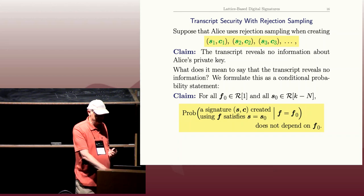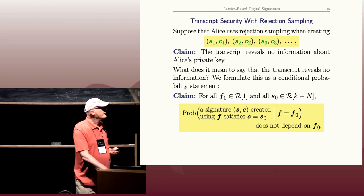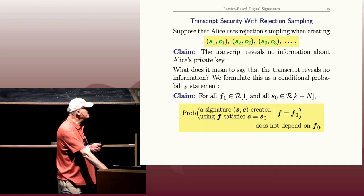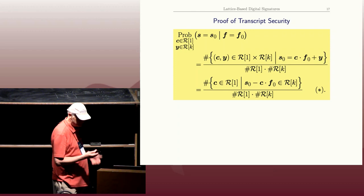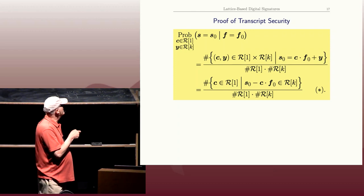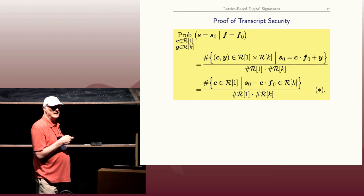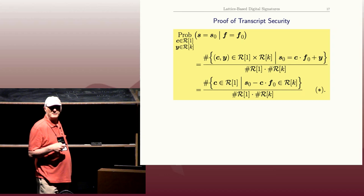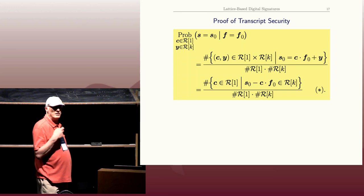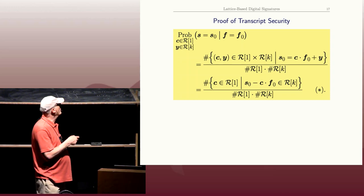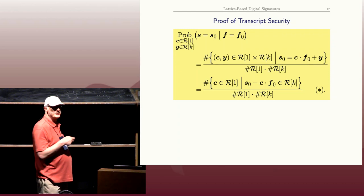That's a good question. Okay, so we want to prove this probability doesn't depend on f_0, even though it's a conditional probability with an assumption that f equals f_0. So let's do the probability calculation. The first line here is just what was on the previous slide, except I made it a little—but I abbreviated it. So the probability that s is s_0 given that the f you used was f_0, where c and y are randomly, uniformly randomly chosen, c with coefficients minus one to one, y with coefficients randomly from minus k to k.